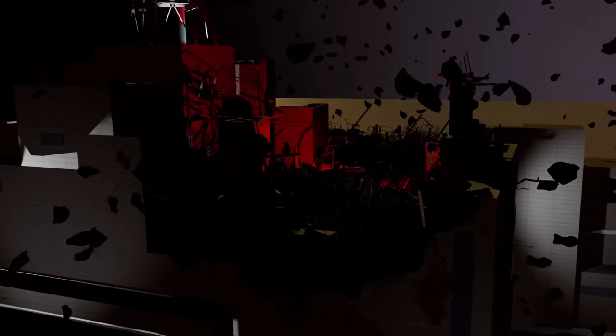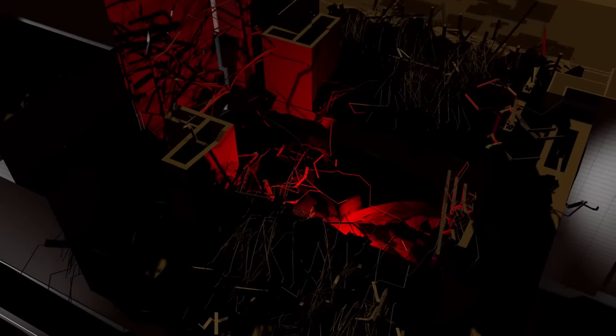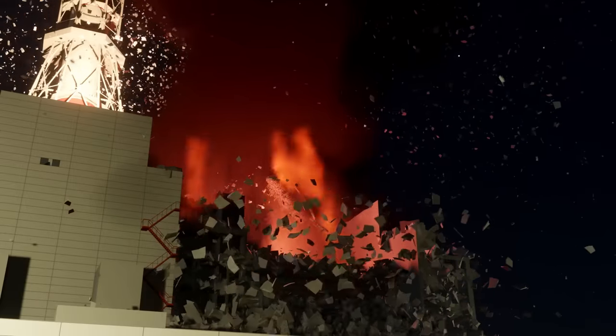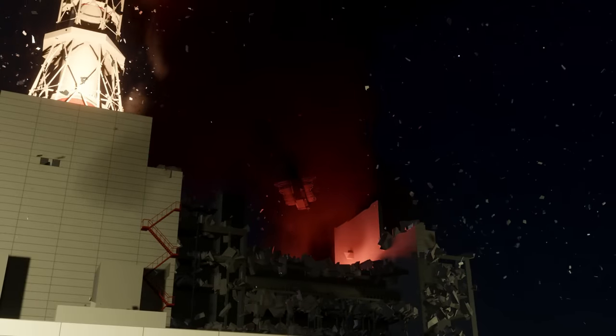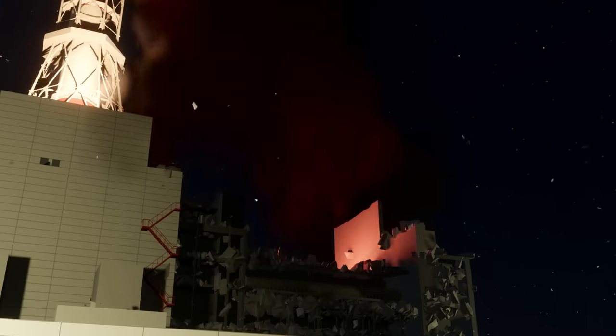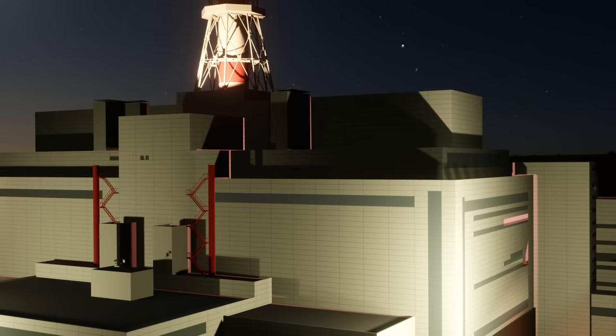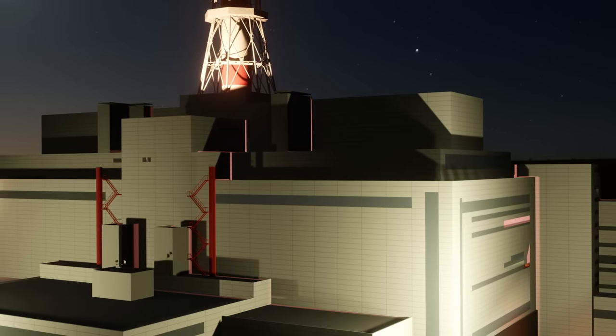The reactor drum and the building structure could not hold all that sudden energy release. The explosion blew the 2000-ton reactor lid through the roof and it landed back in the reactor pit on its side. The north face of the building fell away in the explosion and exposed the steam tanks and main pumps.